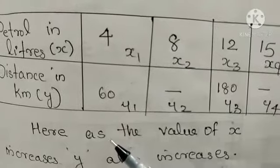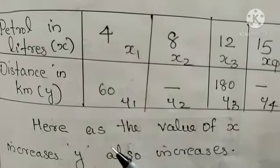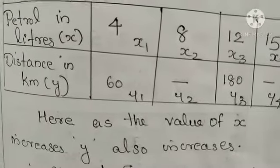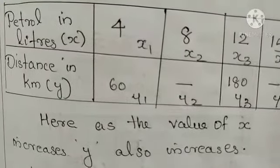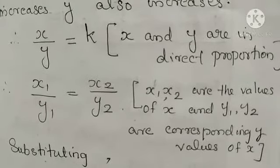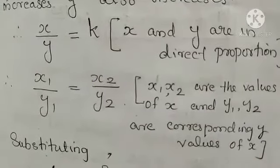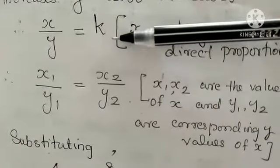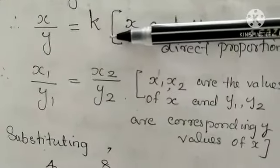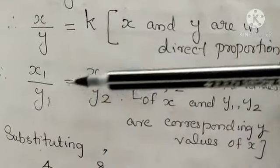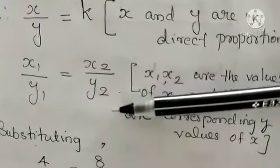What is the condition for direct proportion? x1 by y1 is equal to x2 by y2. That is, x by y is equal to k, a constant. The condition for direct proportion is x by y is equal to k. k means a constant. You can give any variable here. That means x1 by y1 is equal to x2 by y2.